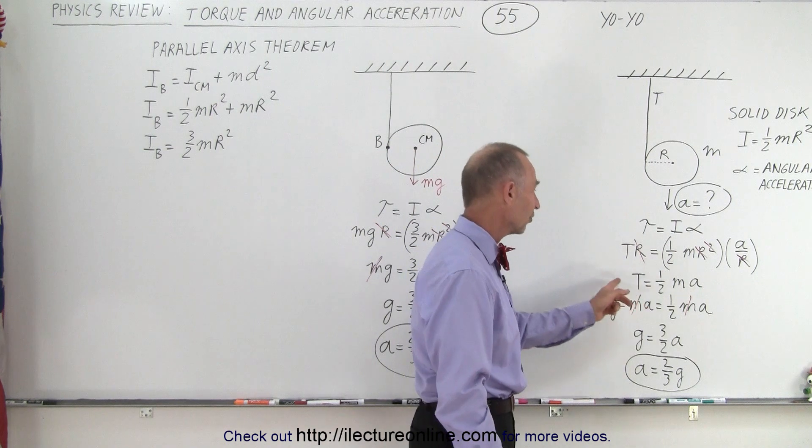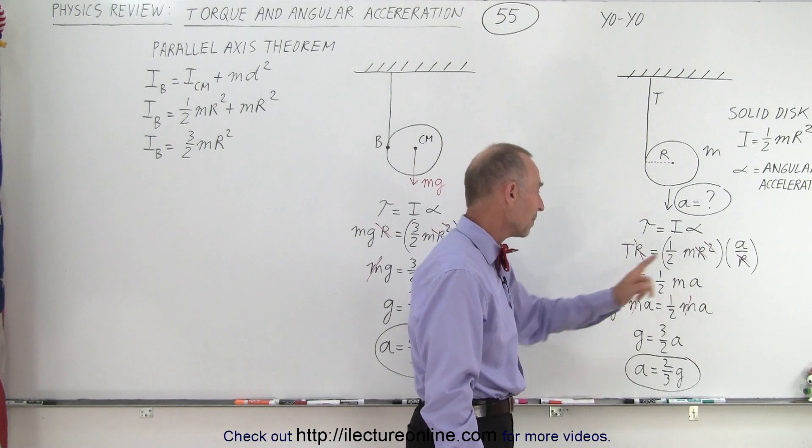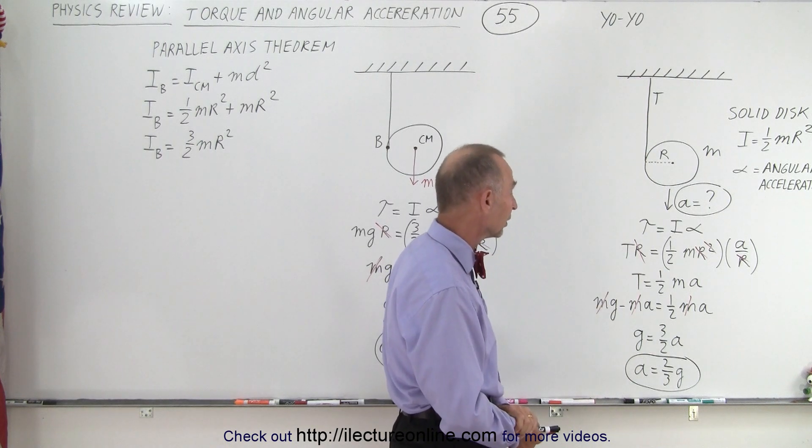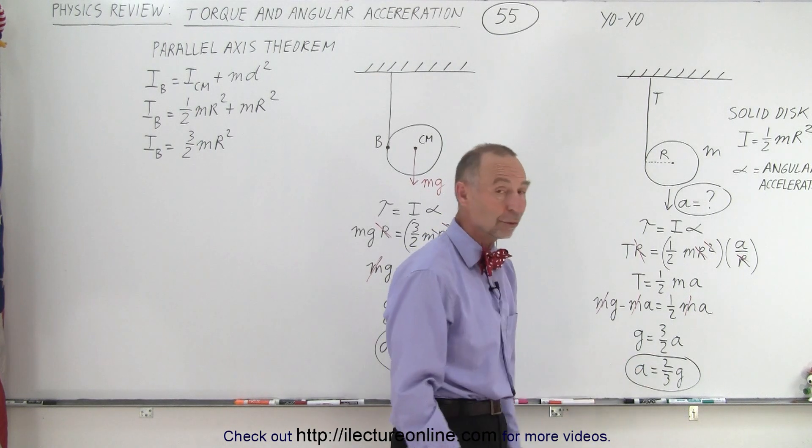Notice that r's cancel out, so we have the tension equals one half m a. The tension plus m a equals mg since the object is accelerating downward, and we solve for a to get two thirds g.